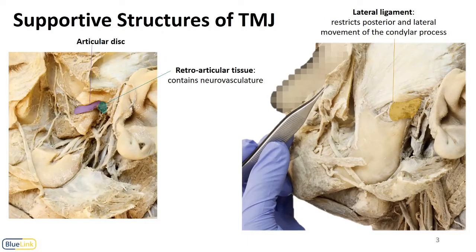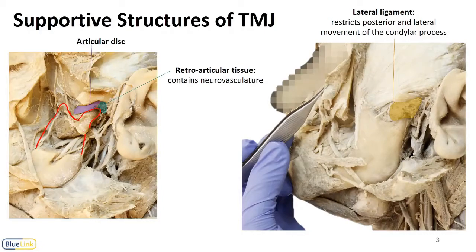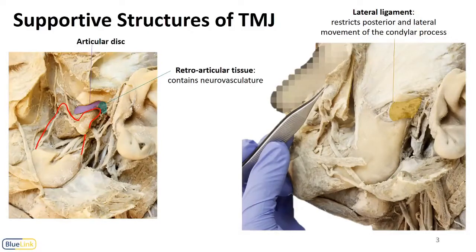If we go deeper and remove the capsule, we then see the articular disc sitting on top of the mandibular condyle. You can imagine the coronoid process completing the portion of the mandible. Just posterior to the disc but still within the capsule we find the retroarticular tissue. This contains neurovasculature, and any swelling or edema in the region can lead to temporomandibular disorder or TMJ syndrome.